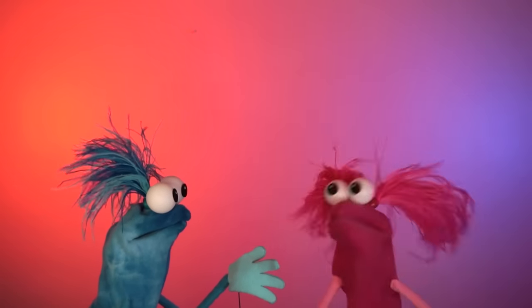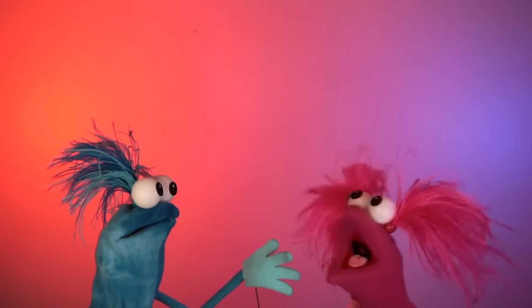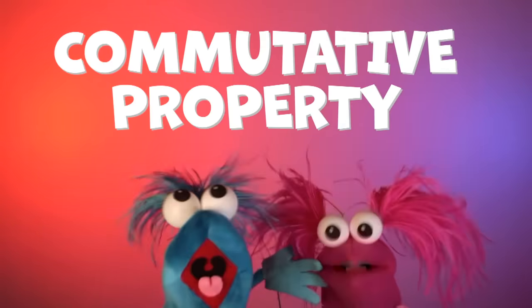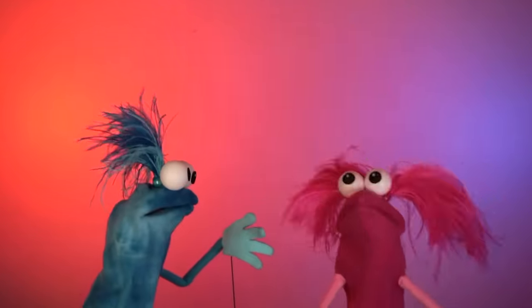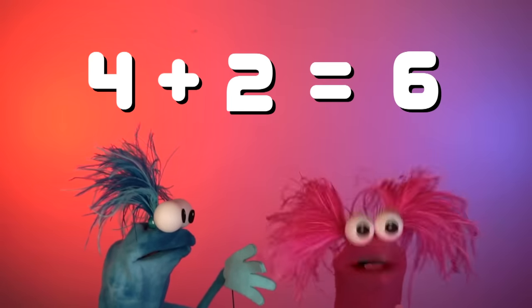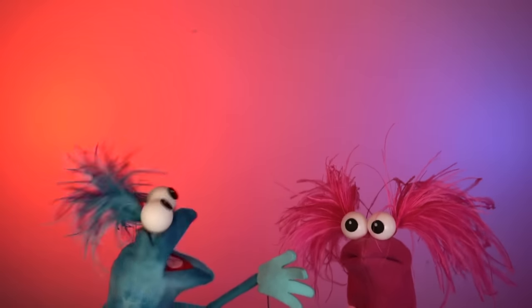That sounds like the commutative property. The cobble bobble? Ugh, the commutative property. What's that? Say it with me. Commutative property. The commutative property is when you switch the order of the numbers in an equation and get the same answer. Huh. Get it? Kind of.